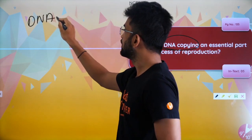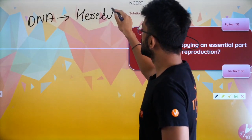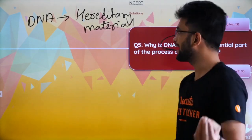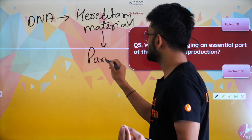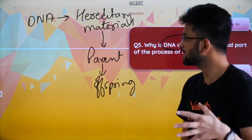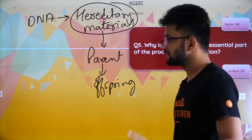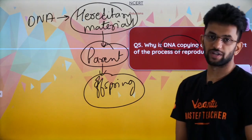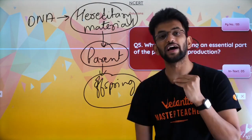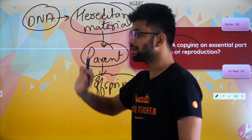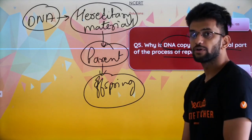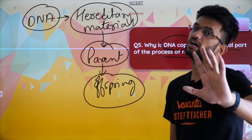First of all, what is DNA? DNA is hereditary material. What does it do? It helps in transfer of characters from parents to offspring. Hence, it is important to make the copy of hereditary material. It is an essential part of the process of reproduction because it helps in transfer of characters from one generation to the other generation.